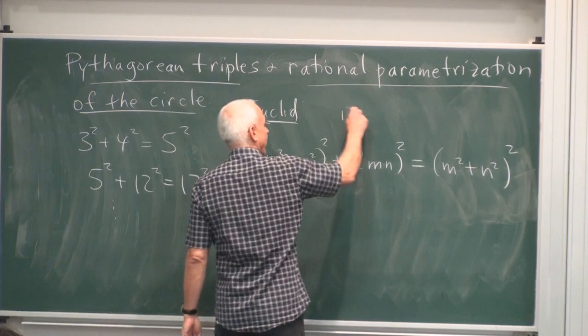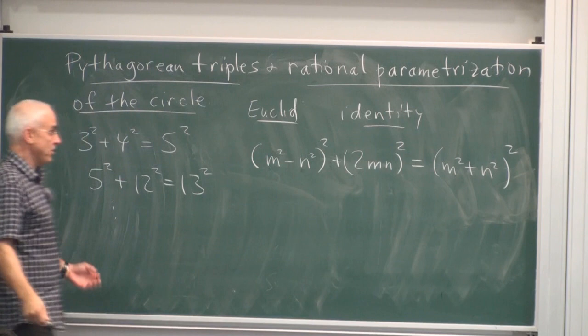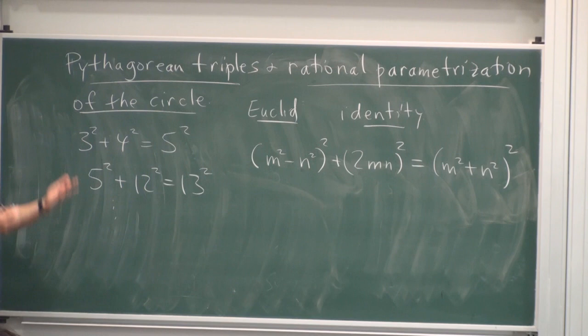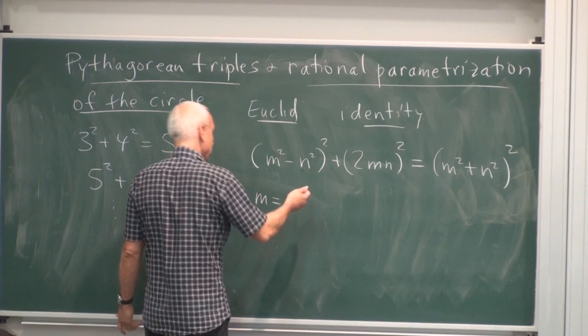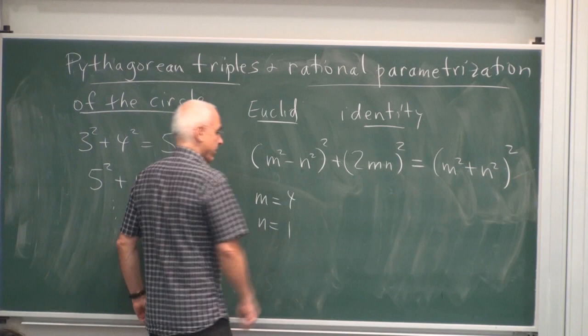This is an identity. And once you've seen the identity, then you know how to generate Pythagorean triples. You just let m and n be any numbers you like. For example, let's let m be, say, 4 and n equal 1.